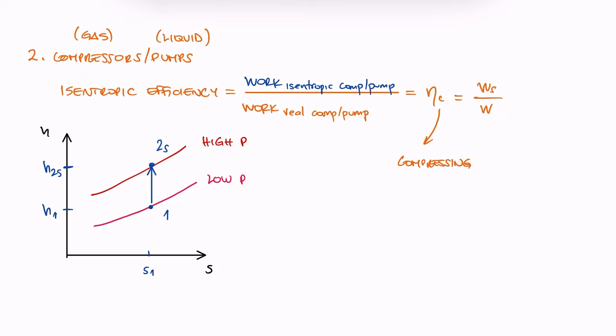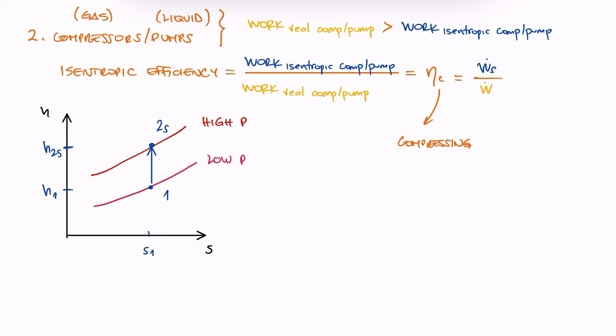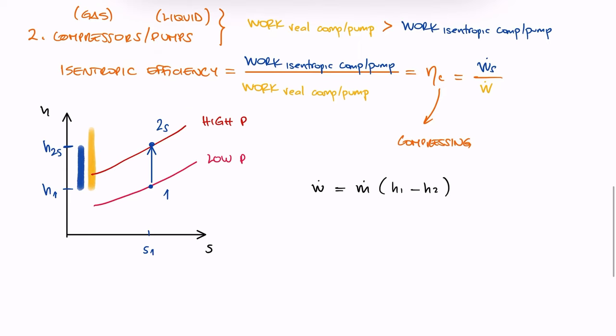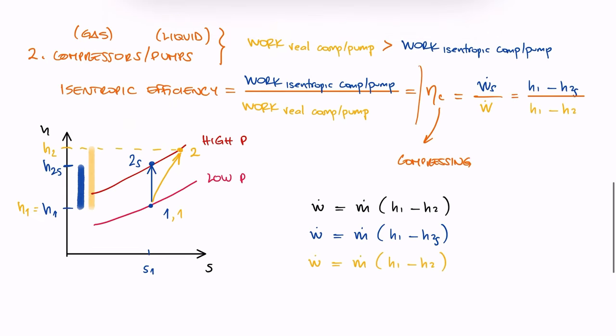The thought process here is the same as before. Since the work required to run the real process has to be greater than the ideal one, that change in enthalpy for a real process has to be greater than the isentropic one, meaning that state 2 is to the right of 2 sub s. As for the expression, the isentropic efficiency for compressors and pumps would be h1 minus h2 s over h1 minus h2.